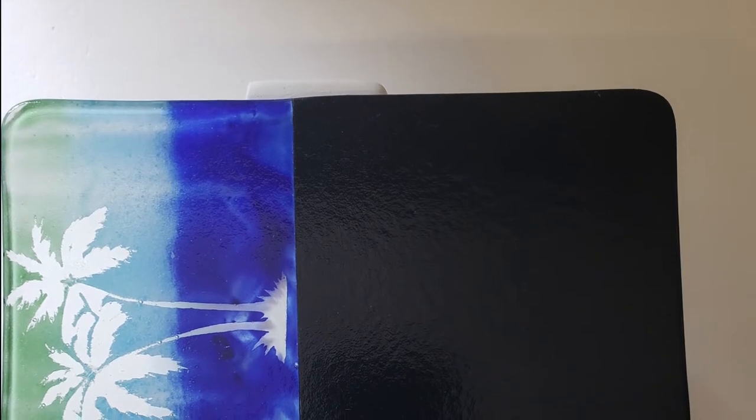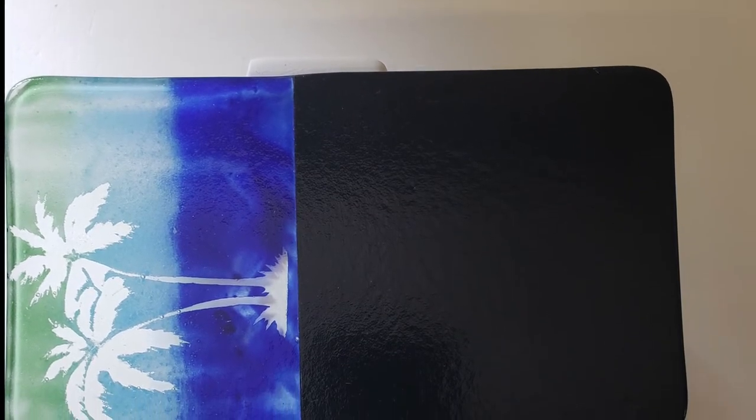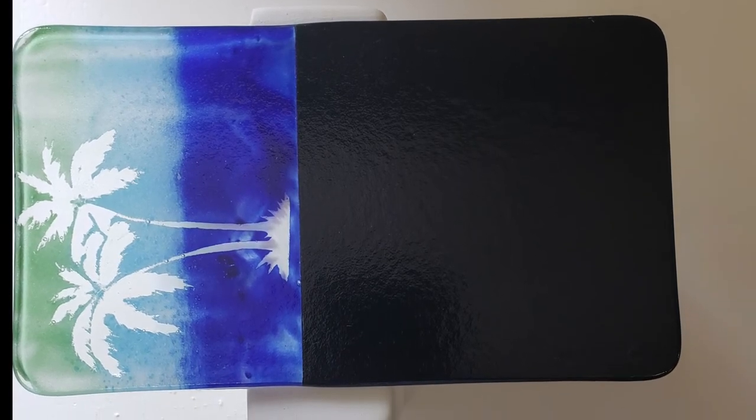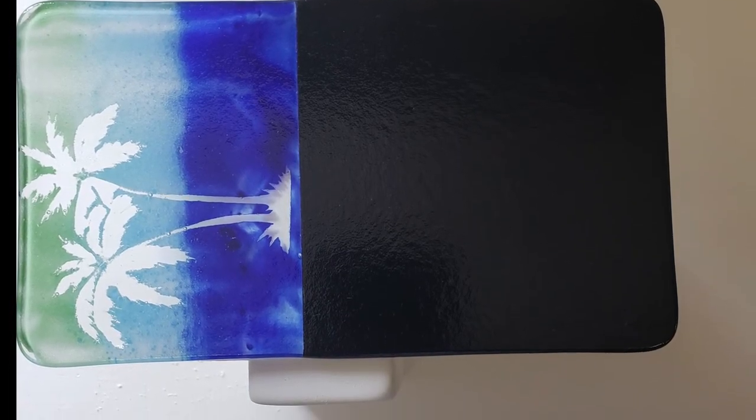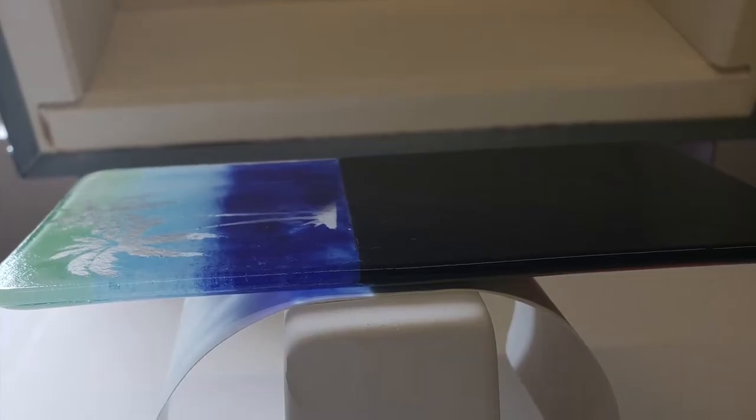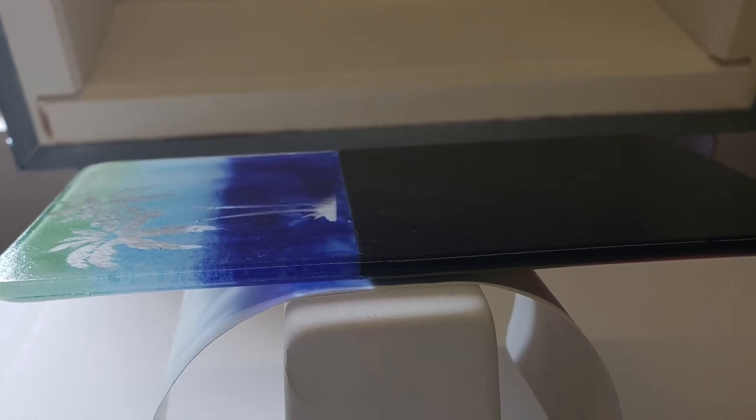Since I want one side of my holder to be longer than the other I need to place it just so on the mold. Having the two different colors of glass made this a lot easier. If you're using a single color of glass you'll need to break out the measuring tape to make sure you're putting it in the right spot.